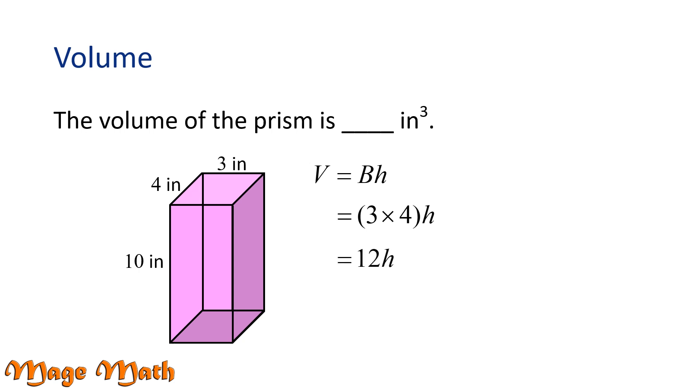Now we want to multiply by the height of the prism, which is 10, so we'll write 12 times 10. And 12 times 10 equals 120. Our units are inches cubed, or cubic inches, because volume is working in 3 dimensions.